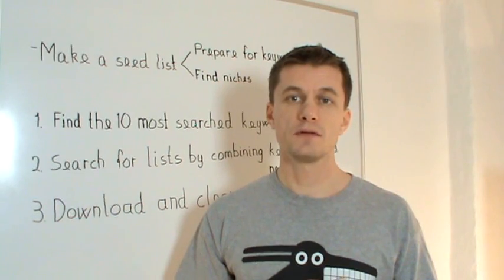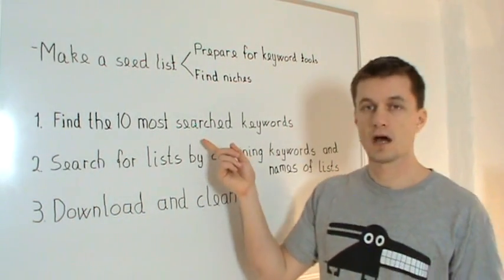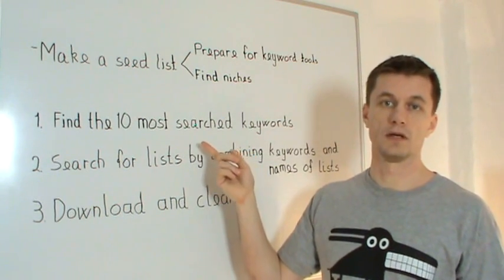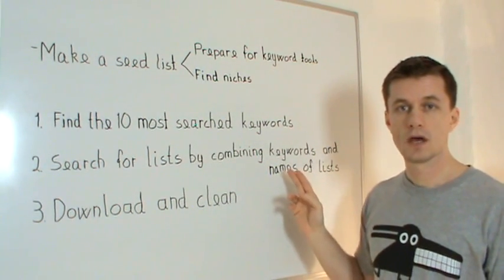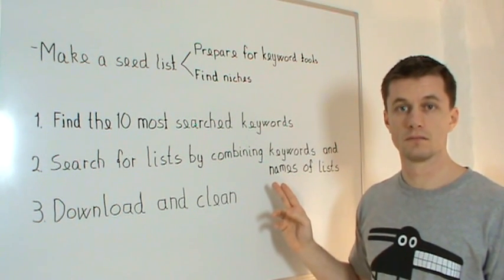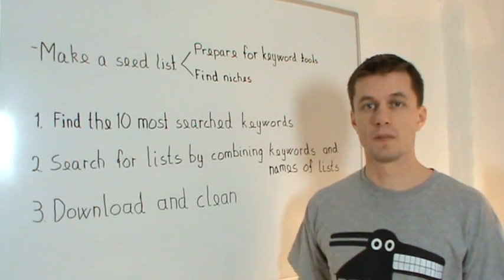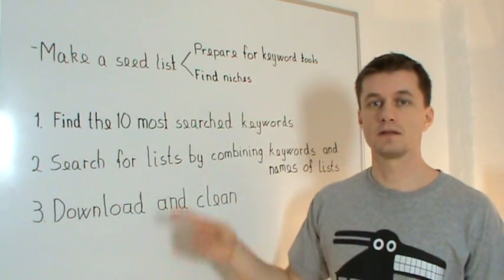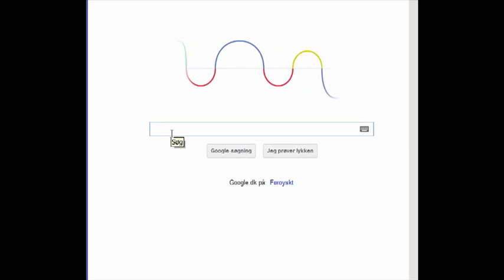I use the three-step method of making seed lists. First, I find the 10 most searched keywords within the industry. Second, I combine the keywords and name of lists to find lists that I can download. Third, I download them and clean them. Let's go and see how we can find the 10 most searched keywords. I like to get my 10 most searched keywords from the belly of the beast herself, Google.